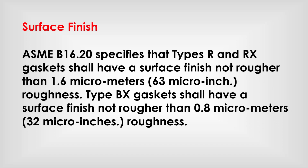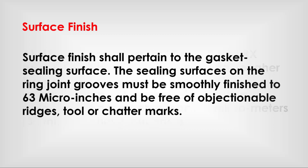Surface finish: ASME B16.20 specifies that type O and R ring joint gaskets shall have a surface finish not rougher than 1.6 micrometers roughness, and type BX gaskets shall have a surface finish not rougher than 0.8 micrometers roughness. The sealing surfaces on the ring joint groove must be smoothly finished to 63 micro-inches and be free of objectionable ridges or tool marks.